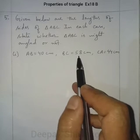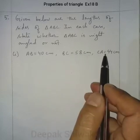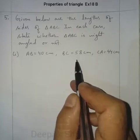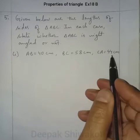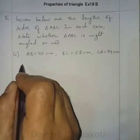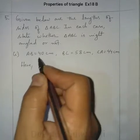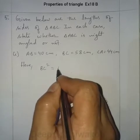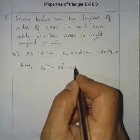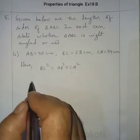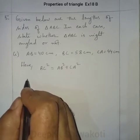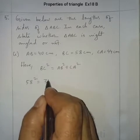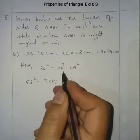Take 58 cm as the hypotenuse; the other two are the remaining sides. According to Pythagoras, hypotenuse square equals the sum of squares of the other two sides. If it is a right-angled triangle, then BC² = AB² + CA². BC is 58, so 58² = 3364.